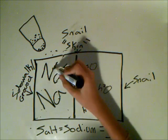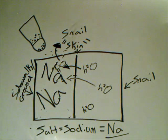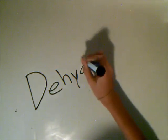And then, because of osmosis, the water that's inside the snail goes out to even it out. Then that gets pushed out. And this dehydrates the snail, killing it.